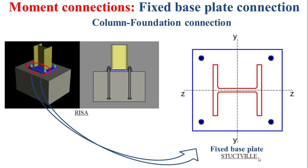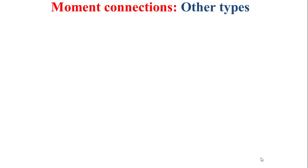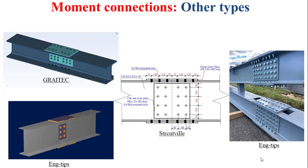I have presented in this educational video the principal moment connections that can be found in steel construction, but there are other types as well, such as the splice moment connection, depicted by the figures, technical drawing, and picture shown in this slide. This educational video ends here. Please, if you have any questions, remarks, or suggestions, mention them in the comments. Thanks a lot for your attention.